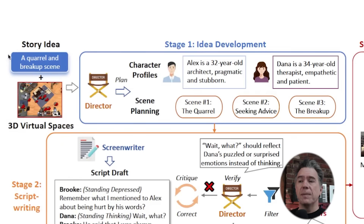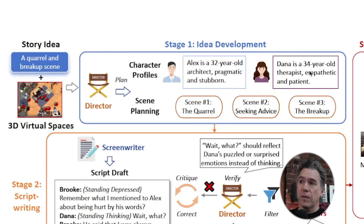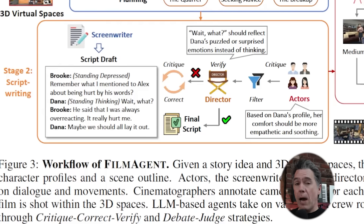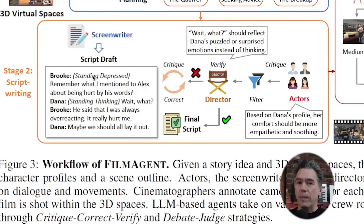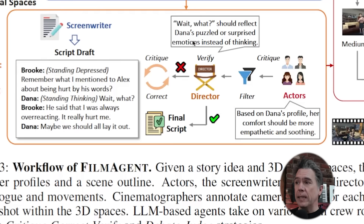Film Agent is actually agent-based: a number of LLMs working together taking on the roles of director, screenwriter, actors, and cinematographers. We begin with a prompt and a 3D virtual space handed to the director, who assigns character profiles for the scene and plans how the scene should flow. The director's output is then taken to the screenwriter agent, who writes a screenplay — but that draft has to be critiqued not only by the director but also by the actors. The screenwriter module definitely has the worst job and is probably super neurotic.